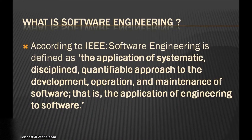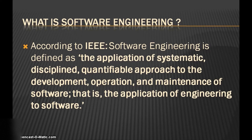Next is the definition of software engineering. According to IEEE, software engineering is defined as the application of a systematic, disciplined, quantifiable approach to the development, operation and maintenance of software — that is, the application of engineering to software. In a nutshell, software engineering can be defined as a technological and managerial discipline concerned with systematic production and maintenance of software that is developed and modified on time and within cost estimates.